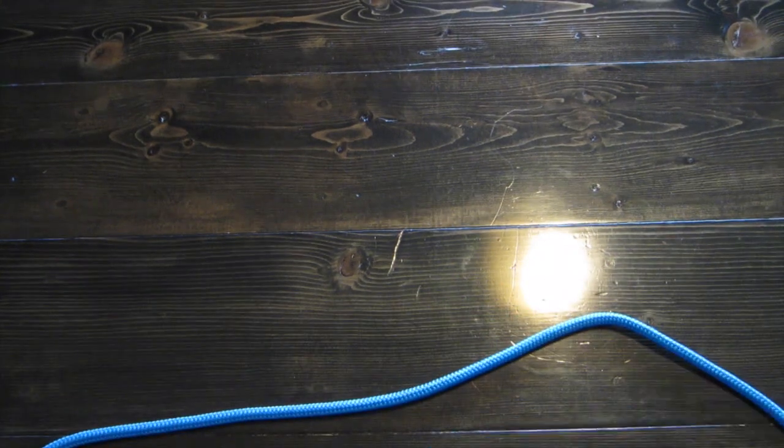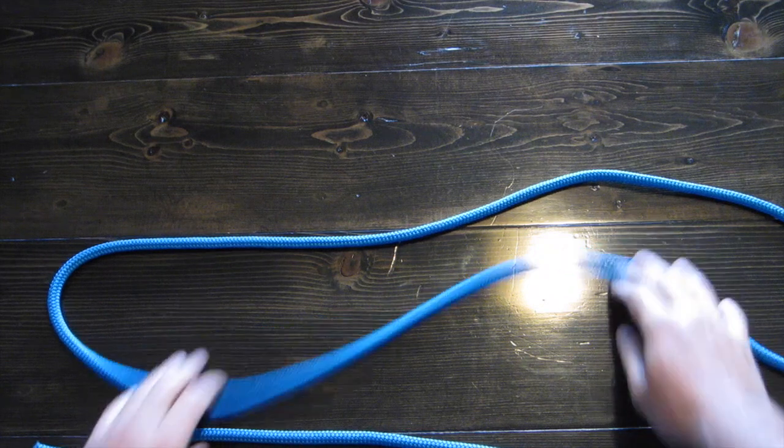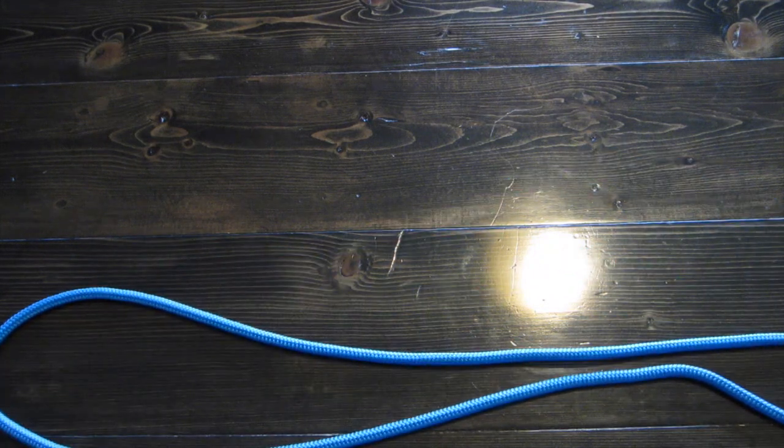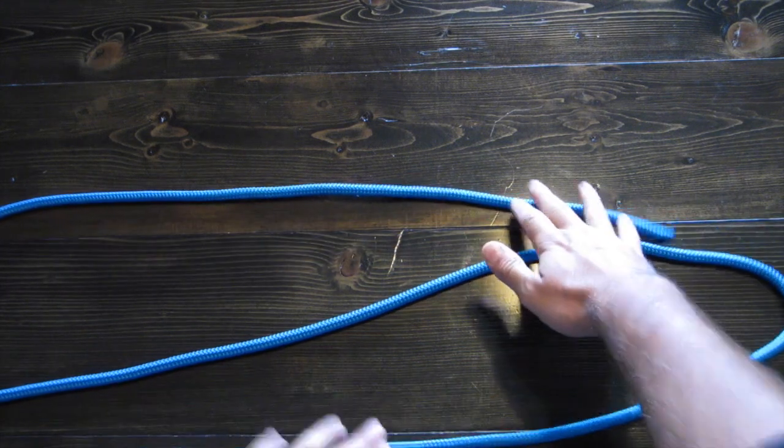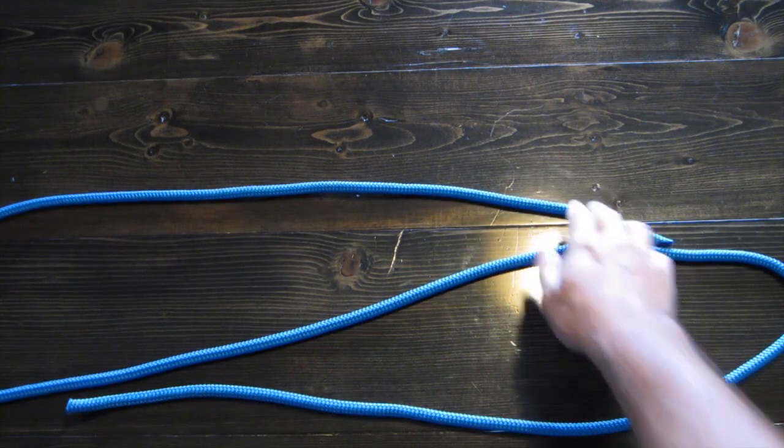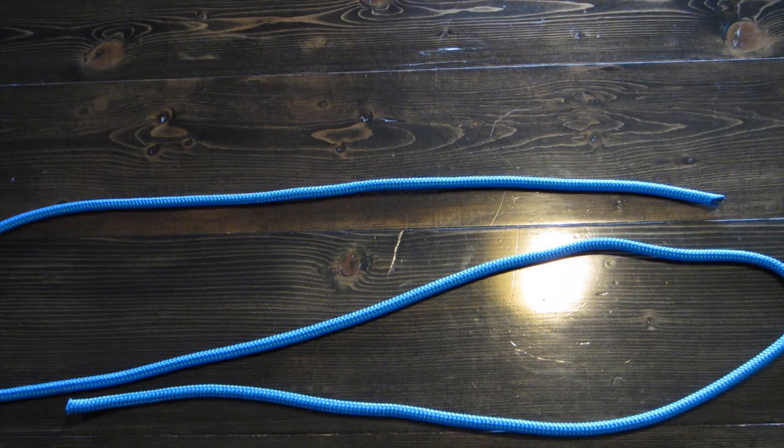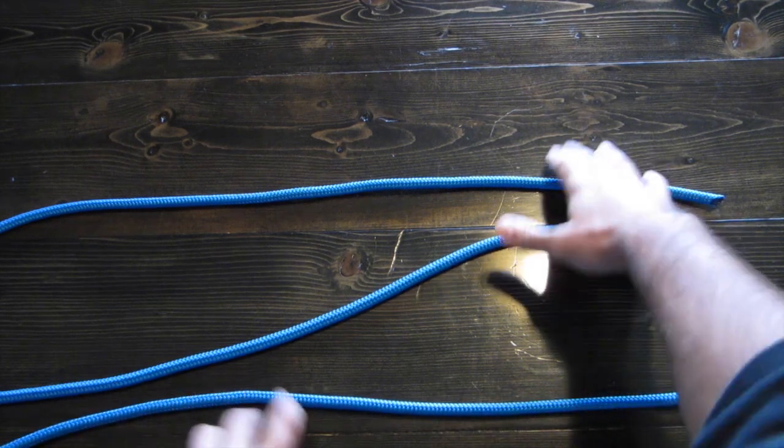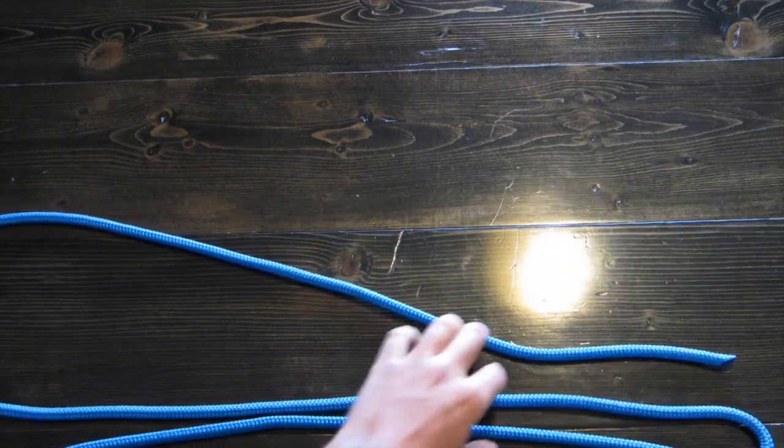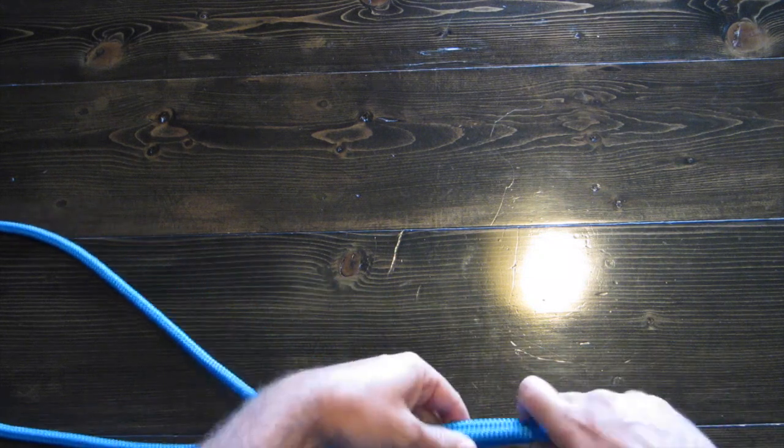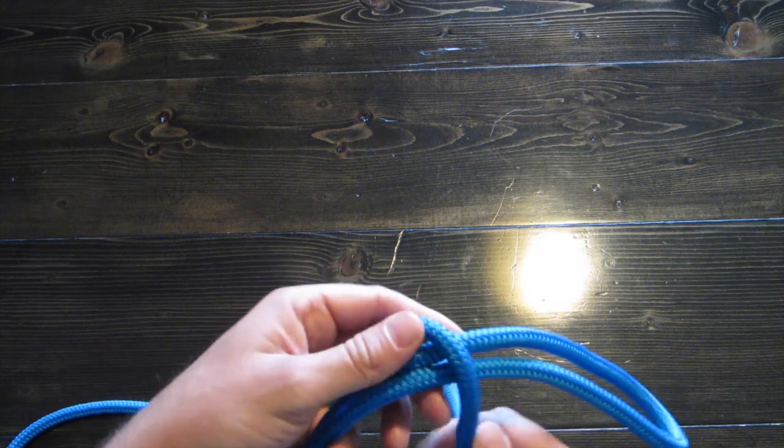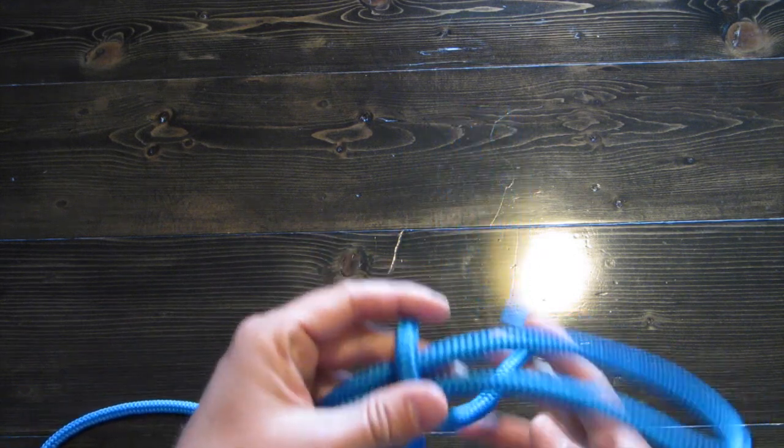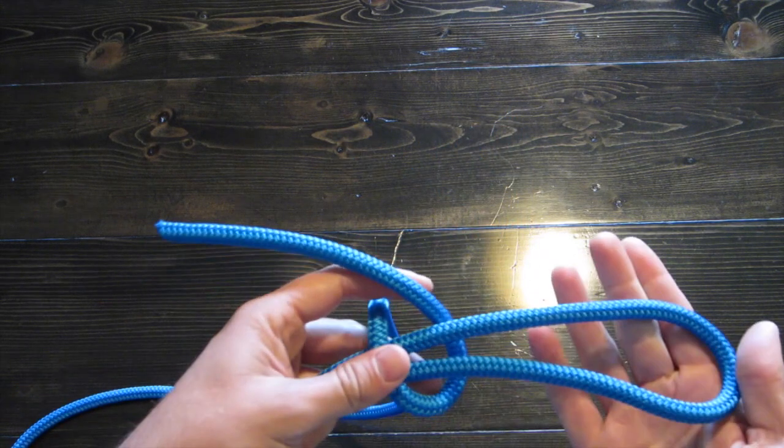You're gonna start off by tripling up your line. Like this. Okay. So, that your ends are like that. And, what you do is basically the same thing. You're gonna take your tail end. And, you're going to wrap it just like you did. You're gonna tie your knot around a doubled end. Like that.